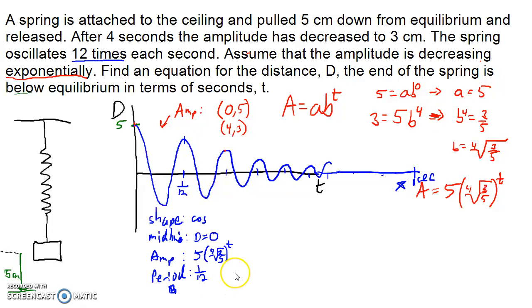Now remember our b in the equation is 2π divided by the period. So in this case that would be 2π times 12 over 1, or in other words 24π.